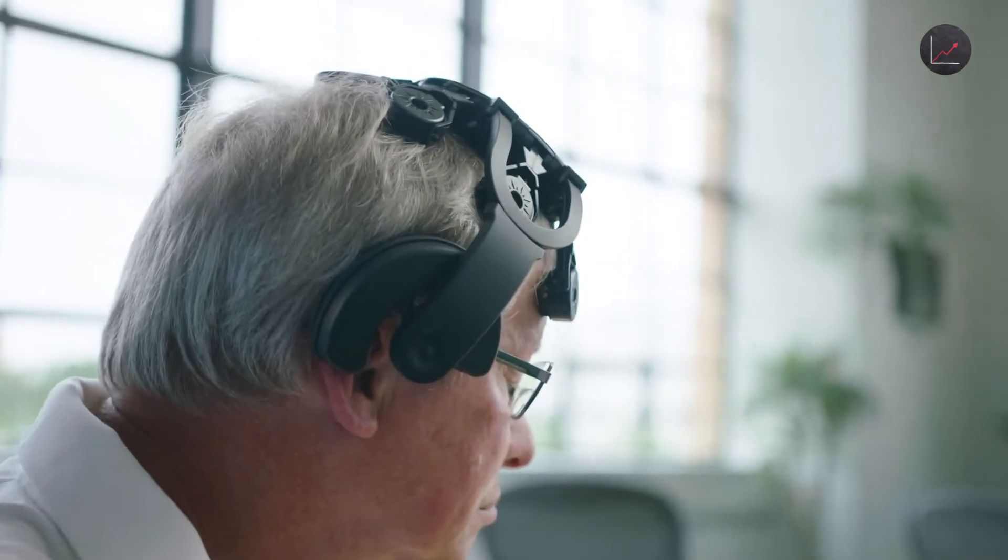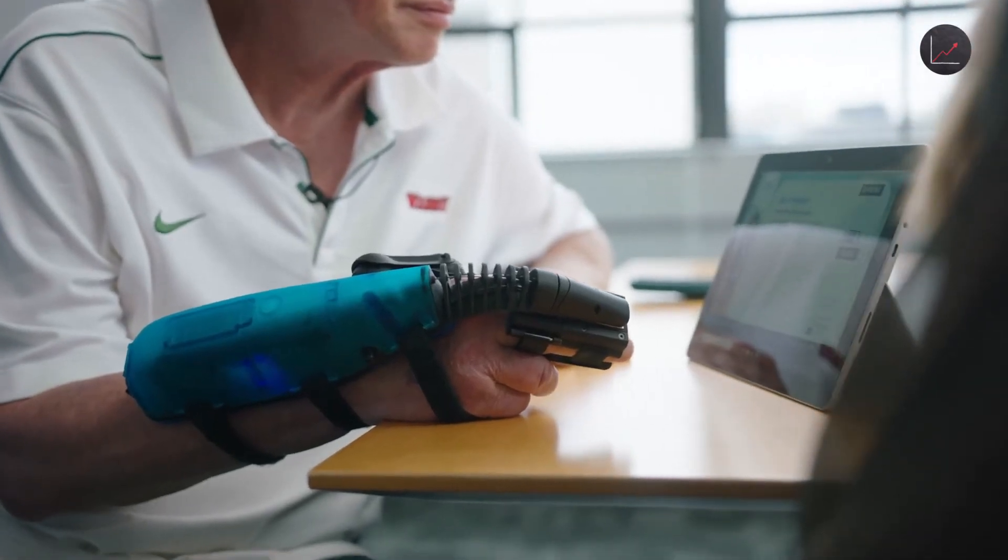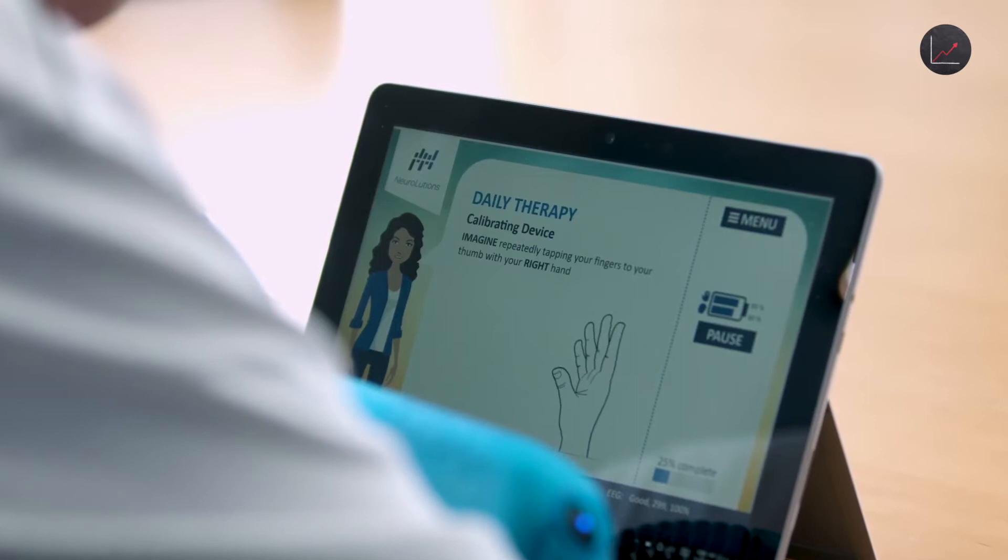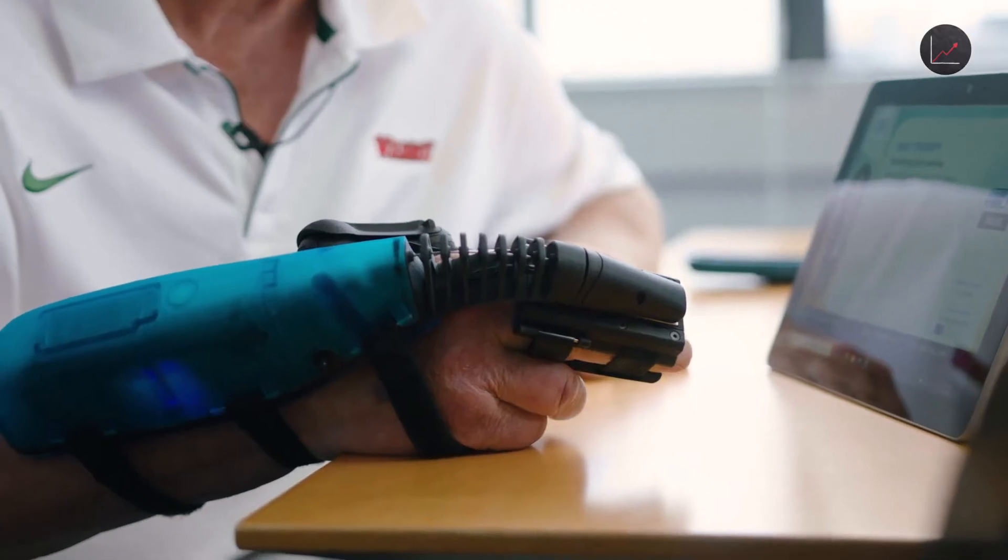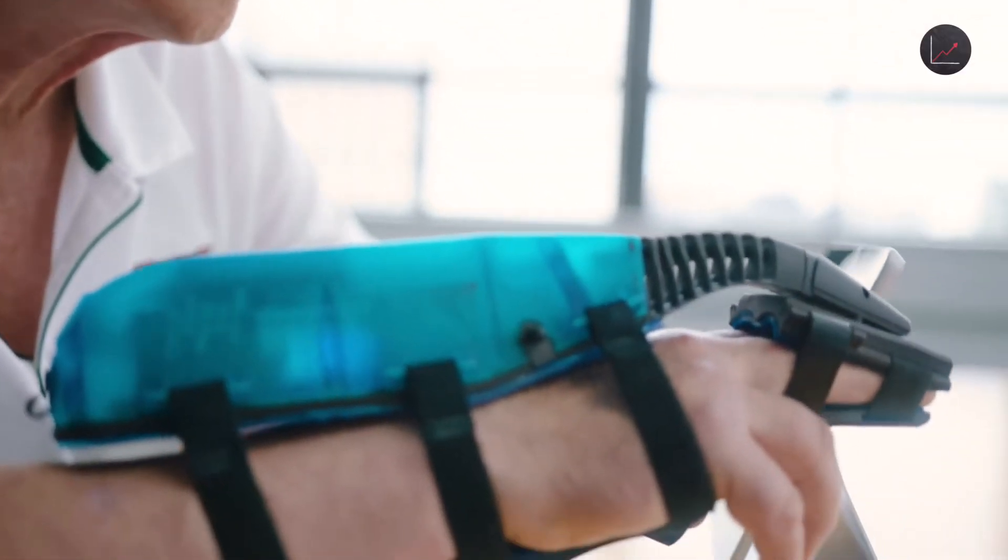And so what we did is we created a brain computer interface that really has three parts to it. A wearable headset, a robotic exoskeleton, and a tablet that walks them through how to use the system. At the beginning of the program, it tells you not to move your hand, but think about moving your hand. And that's what you have to do. And just imagine. It's picking up that intention to move on the uninjured side of the brain. It's converting that intention to a movement of the exoskeleton.